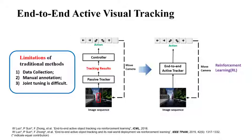To alleviate these problems, we propose an end-to-end active visual tracking model. It takes an image sequence as input, learns its hidden representation, and directly maps it to camera motion. Learning is realized by reinforcement learning. Compared to the traditional two-step method, the new one does not require bounding box annotation — it needs no specifically trained target detector.